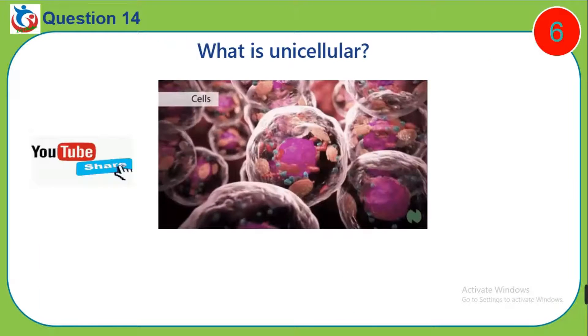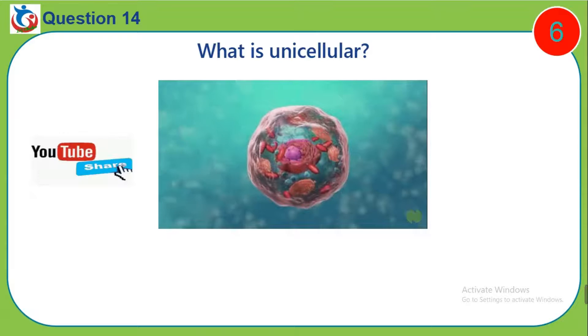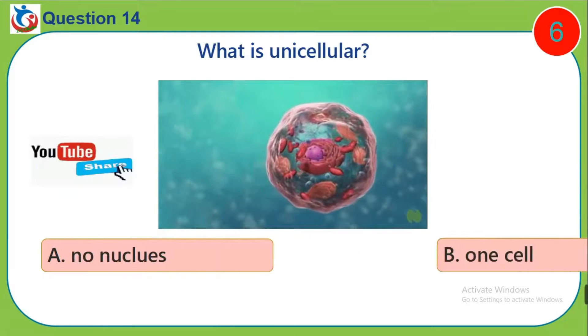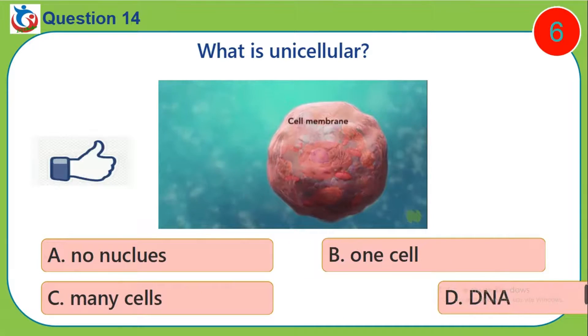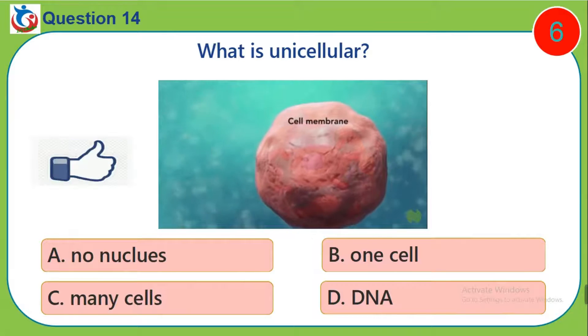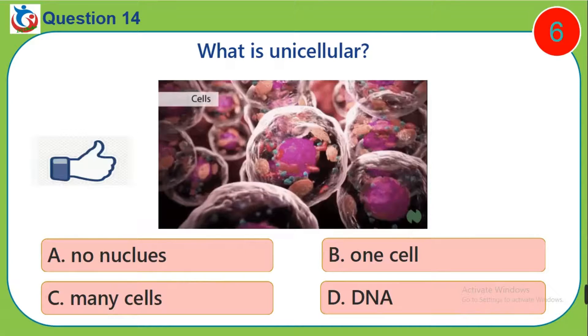Question 14. What is unicellular? A. No nucleus. B. One cell. C. Many cells. D. DNA.